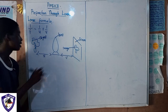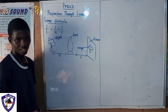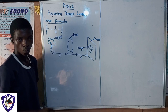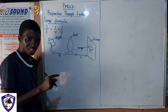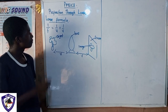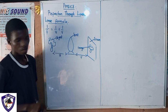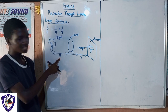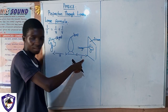For the lens formula, we have a diagram where you have your object, your lens — it could be the converging lens or the diverging lens — and likewise we have our screen. The formula is: 1 over f equals 1 over u plus 1 over v. Our f is the focal length, our u is the object distance, and our v is the image distance.